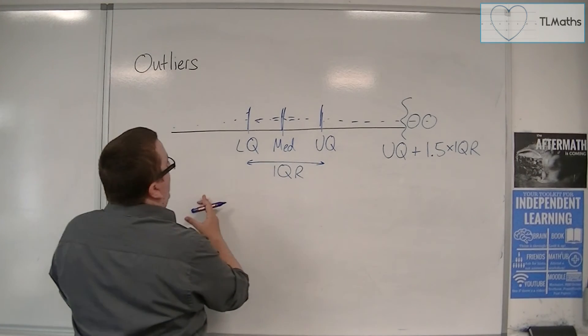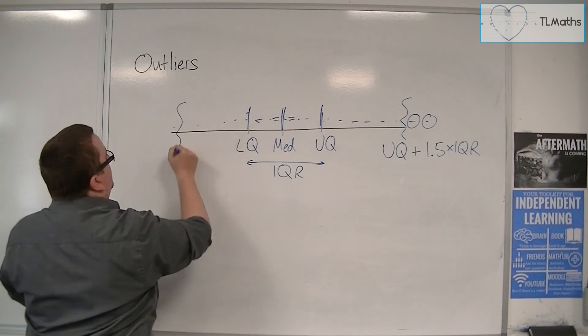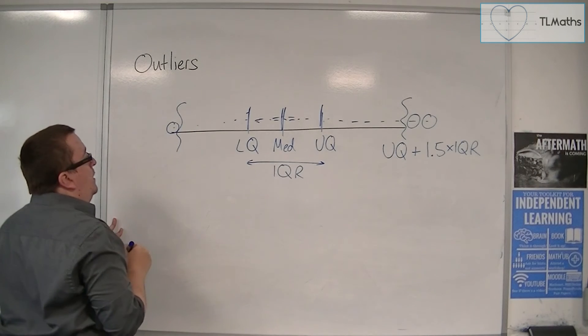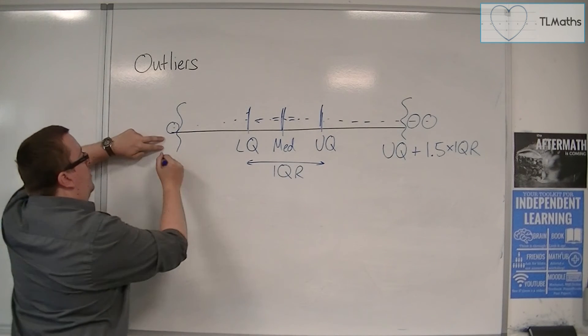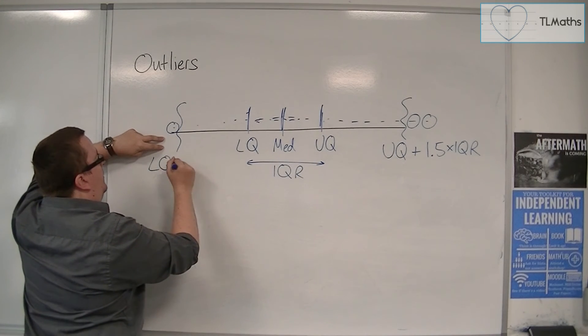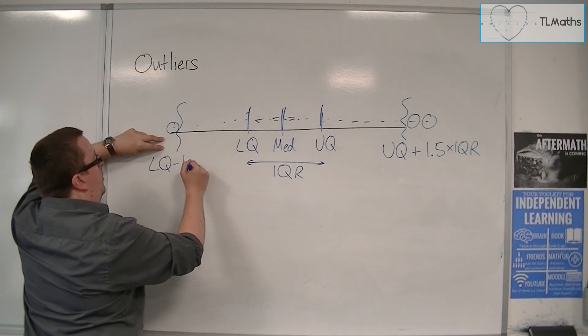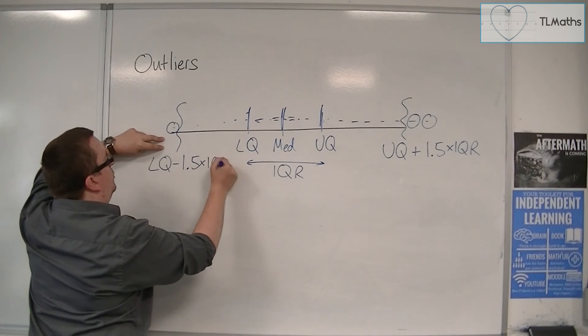We will also count as outliers any bit of data which is beyond the lower quartile take away 1.5 times the interquartile range.